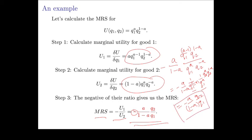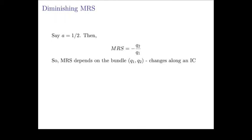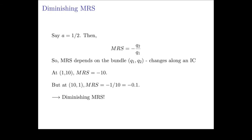Can we verify that this marginal rate of substitution is diminishing? Indeed we can. Let's plug in a equals one-half. When a equals one-half, the a and 1 minus a are equal and cancel, so the MRS is just the negative Q2 over Q1. The MRS clearly depends on Q1 and Q2 and changes as you move along the indifference curve. At the bundle (1, 10) and (10, 1), you get the same utility level, so they're on the same indifference curve. At (1, 10), the MRS is minus 10; at (10, 1), the MRS is minus 1/10. Clearly, you have a diminishing marginal rate of substitution.